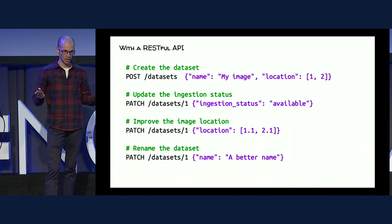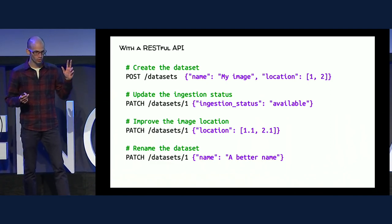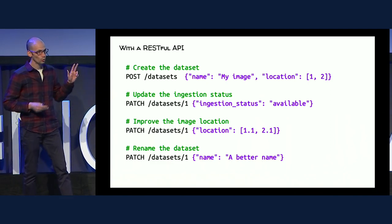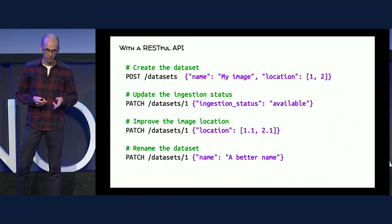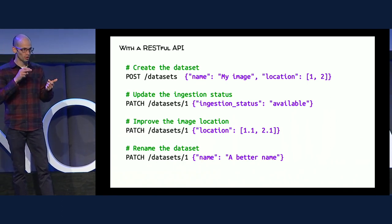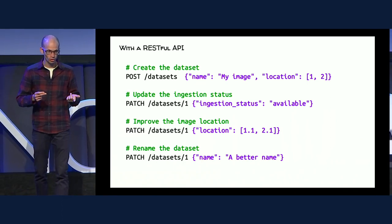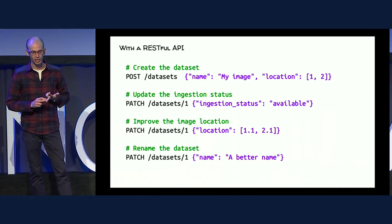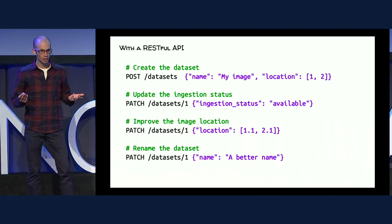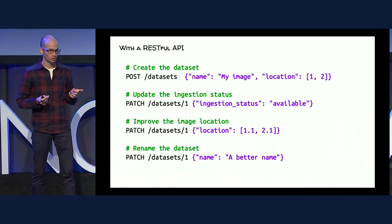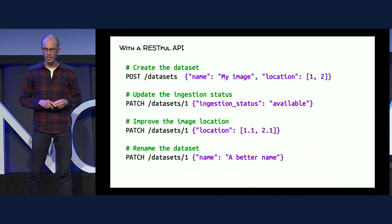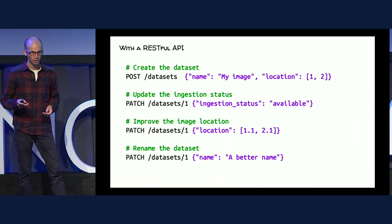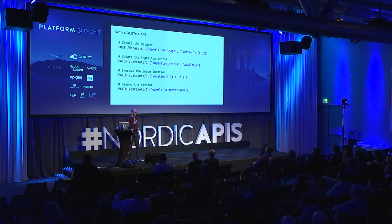Can you see the problem here? We have three different actions done by three different actors — an internal process, the end user, and another internal process — but we have one single endpoint: PATCH /dataset. If you are involved in authorization logic, you know that it will be complicated. So that's our first problem.